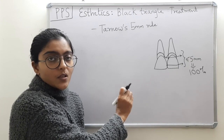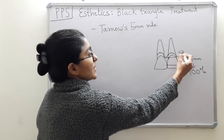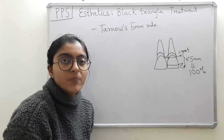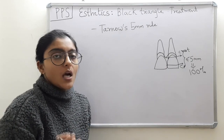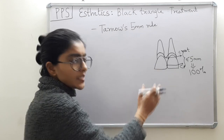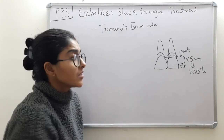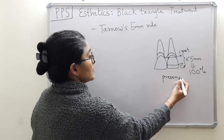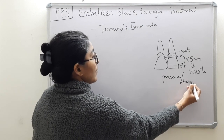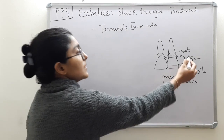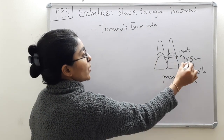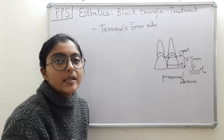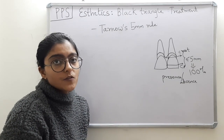This is Tarnow's 5mm rule. If the distance between the crest of the alveolar bone and the contact point is less than or equal to 5mm, the papilla was present almost 100% of the time — maybe 98%, but almost always present. Nothing to do with the percentage of fill; it is merely presence or absence. For the papilla to be present completely, the distance between the crest of the alveolar bone and the contact point should be less than or equal to 5mm. This factor must be kept in mind while deciding whether to go for papilla reconstruction or not.